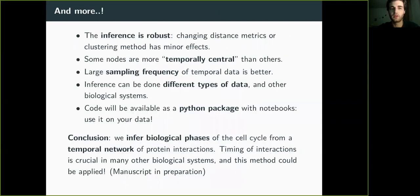So we're coming to the end. There's many more things I cannot tell you in five minutes, for example, that we check the inference is robust against changes in the clustering and distance metrics. There's interesting questions about which nodes are more temporally central than others, effect of sampling frequency of the data, different types of data.